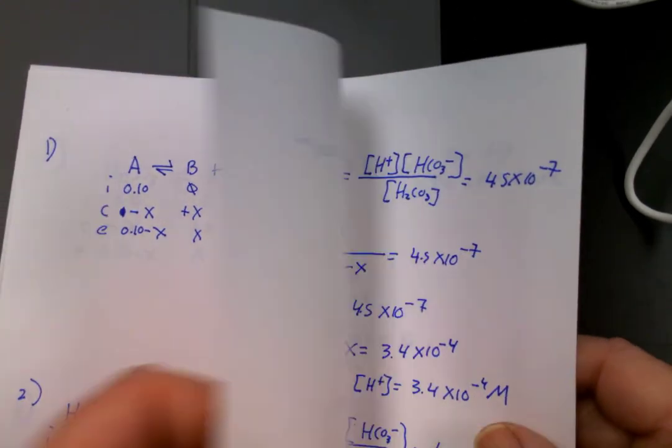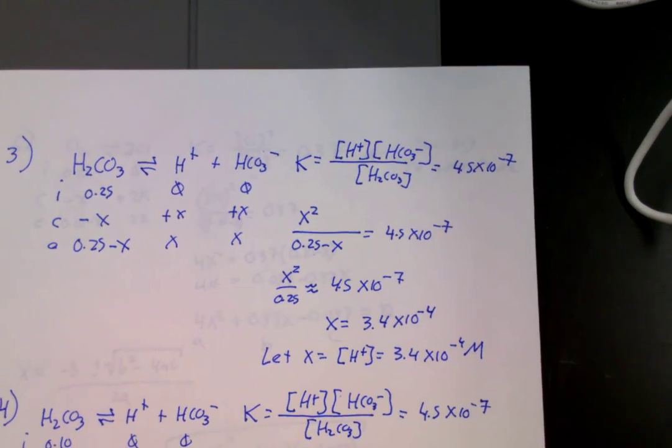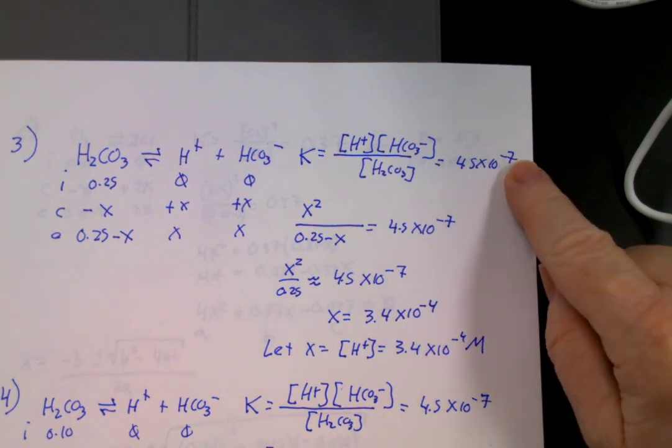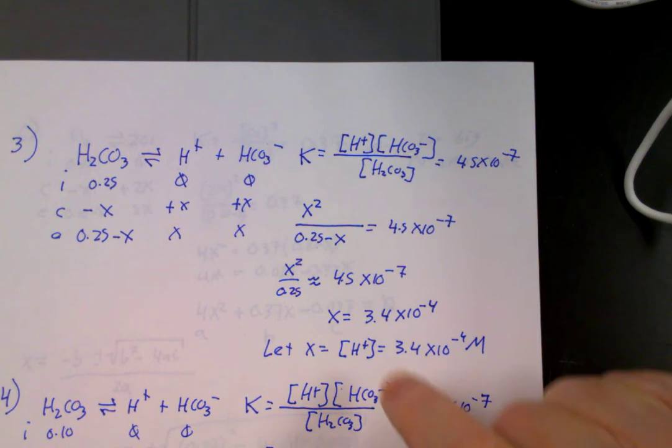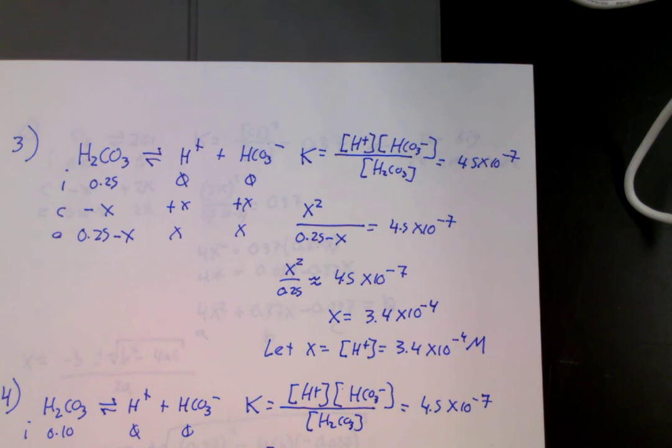So now let's move along. Look at questions 3, 4, and 5. So here is number 3. Again, almost an identical setup. I tried to do that for these first 5 questions. Still a small k. This time initial concentration is 0.25 molar. I did an approximation. Let x equal the H plus, which is 3.4 times 10 to the negative 4th molar.